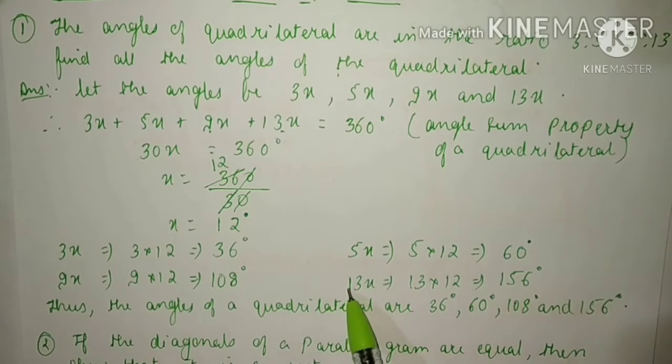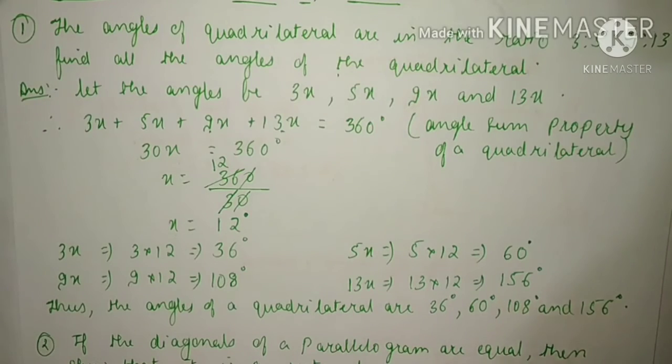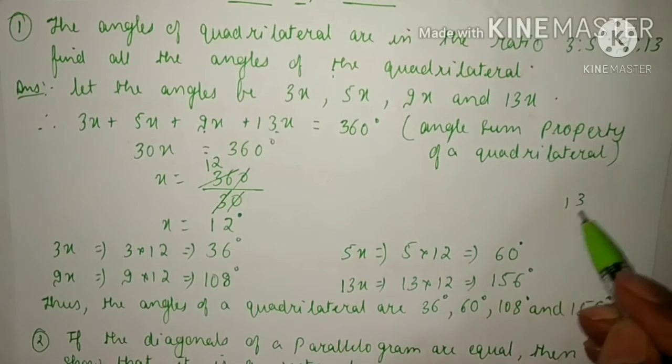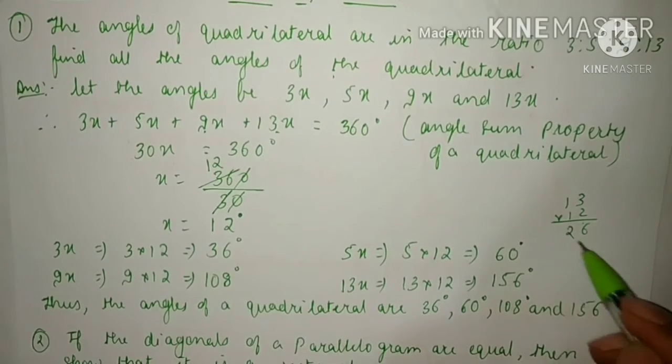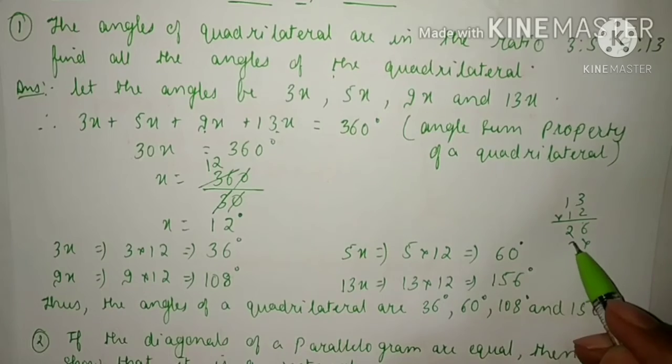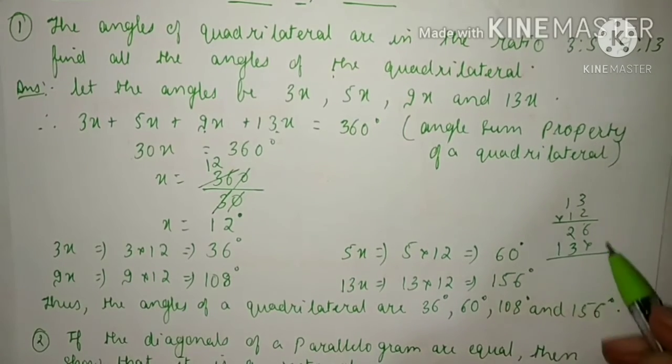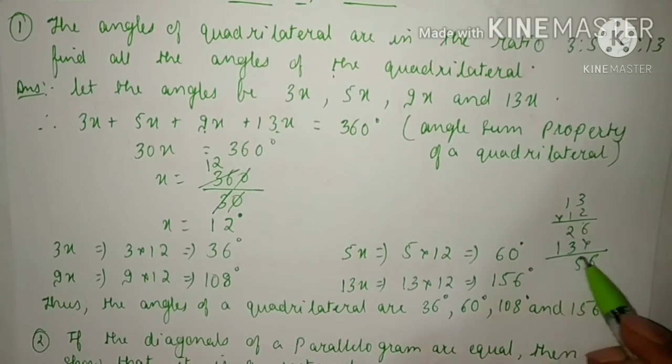The fourth angle is 13x, so 13 × 12. Let me multiply: 13 × 12... 3 times 2 is 6, 2 times 6... 2 into 1 into 3 is 3, 1 into 1 is 1... 6, 5, 1.